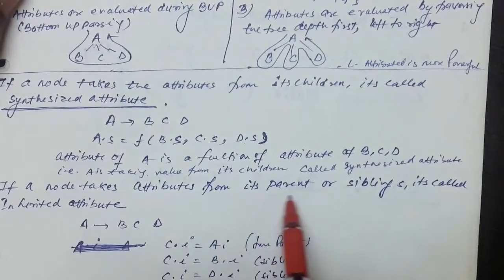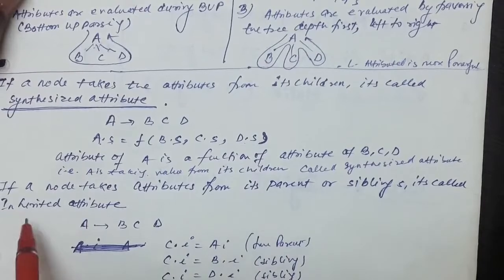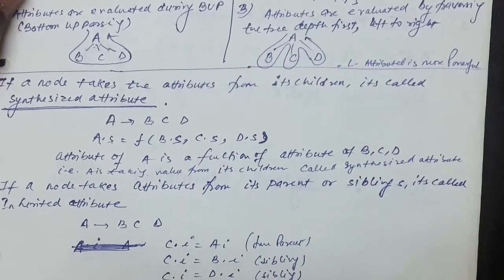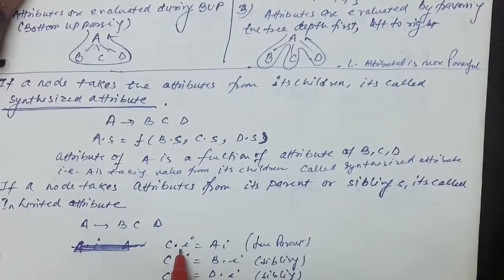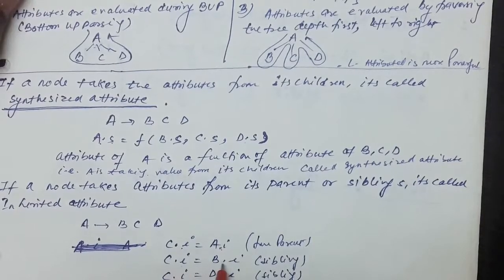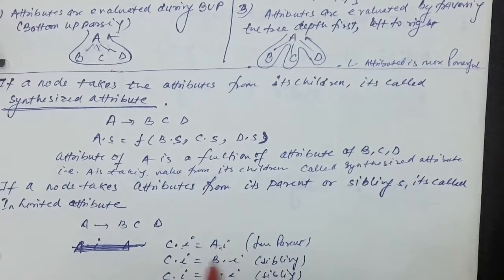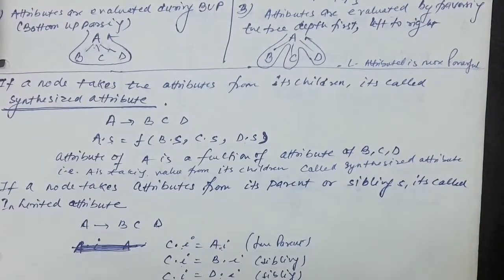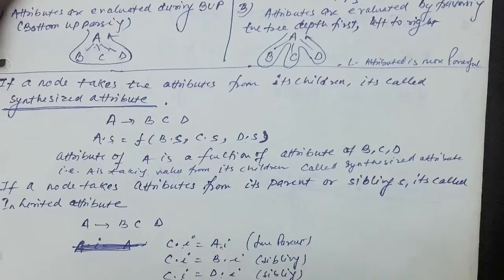If a node takes attributes from its parent or sibling, it is called an inherited attribute. For example, in A produces BCD, C.I = A.I means C is taking from the parent. C.I = B.I means C is taking the value from its sibling B. Similarly, D takes the value from its sibling. This is the inherited attribute.